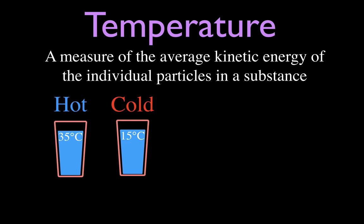For example, if we have two beakers of water, one being 35 degrees Celsius and one being 15 degrees Celsius, some people might say 35 degrees Celsius is hot, especially if you want to take a bath or something like that. That might be kind of hot. But if you're trying to cook and you want to boil water, that's not really that hot.